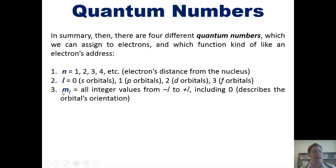Third is the m sub L, or magnetic quantum number. This is equal to all integer values from negative L to positive L, including zero. This describes the orbital's orientation, or which kind of that type of orbital we're talking about. For example, if I've got a p orbital, it has an L number of one, which means that it can have an m sub L number of plus one, zero,